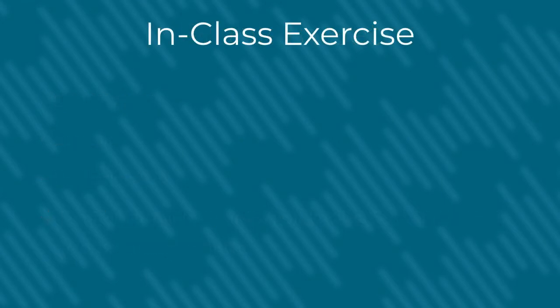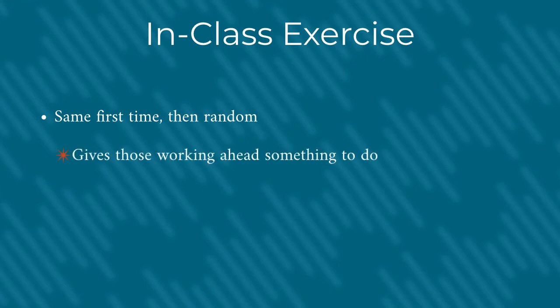An in-class exercise is the same for all students the first time it's started, and then if a student re-starts the assignment, it will be random. This is designed to give the students who work ahead in class something to do. If they finish the one you're working on together, they can start a new variation and the problems will be slightly different.